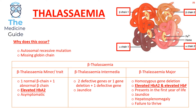Beta thalassemia major typically presents in the first year of life with jaundice, hepatosplenomegaly, and failure to thrive. Beta thalassemia commonly affects patients from a Mediterranean ancestry, whereas alpha thalassemia occurs more commonly in patients from an Asian ancestry.